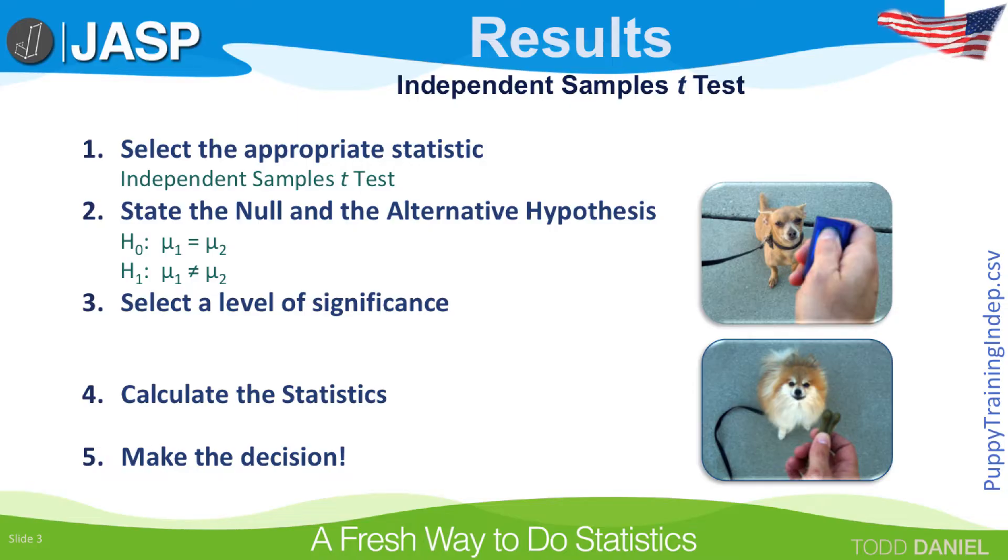Step three, select a level of significance. We have already established that this is a two-tailed test. Our alpha level is going to be 0.05. The degrees of freedom for an independent samples t-test is n₁ - 1 + n₂ - 1, or n₁ + n₂ - 2. The total n of both groups minus 2.